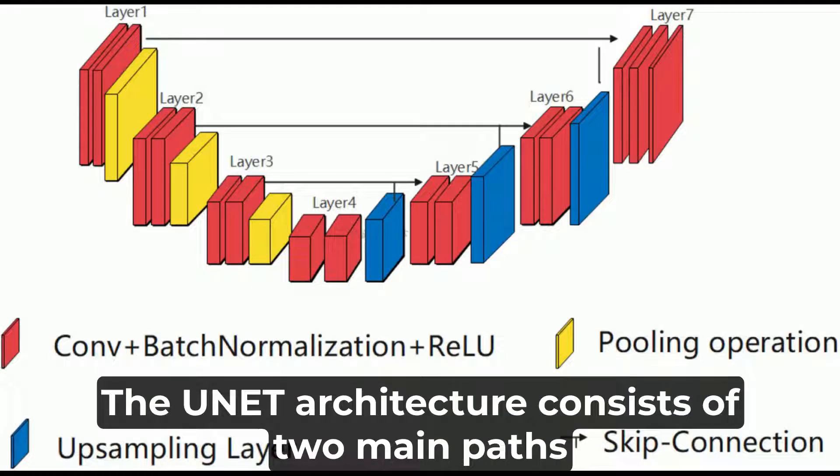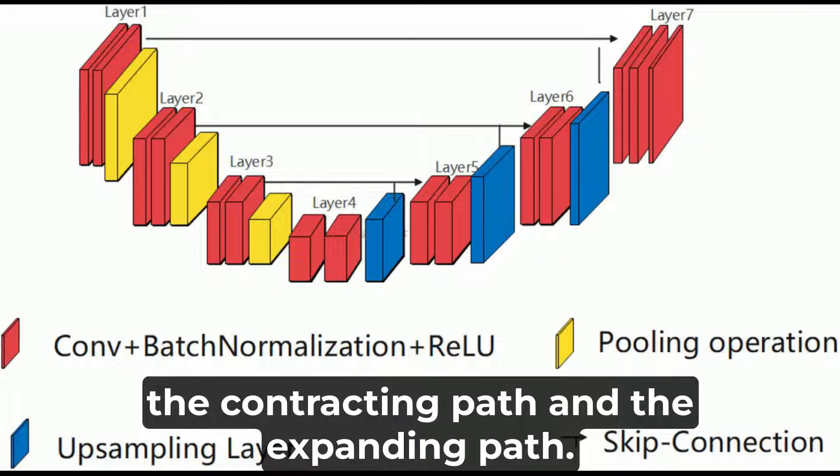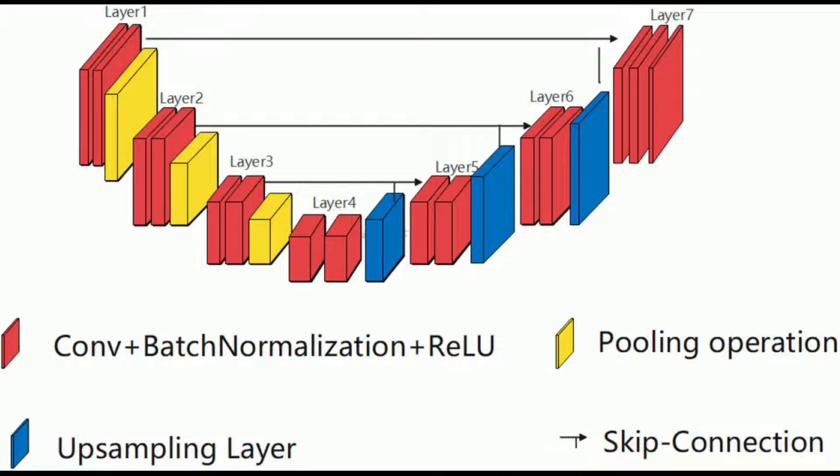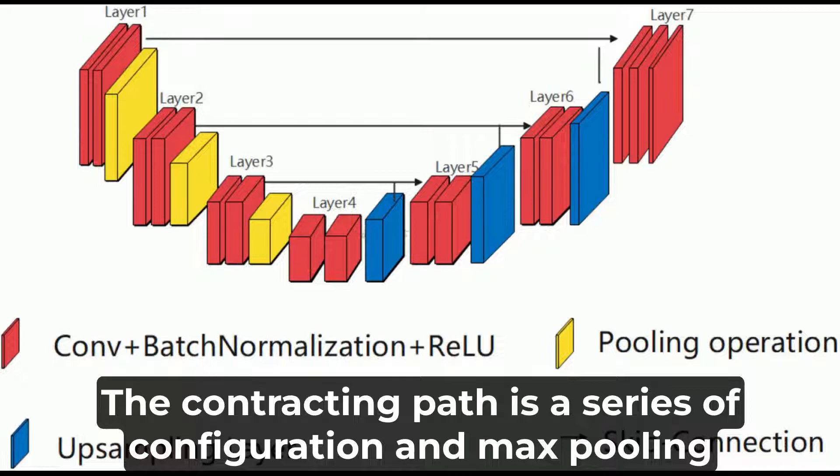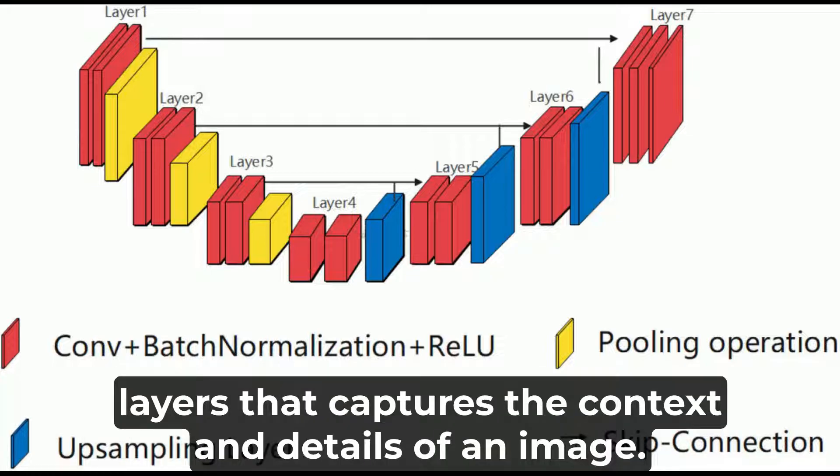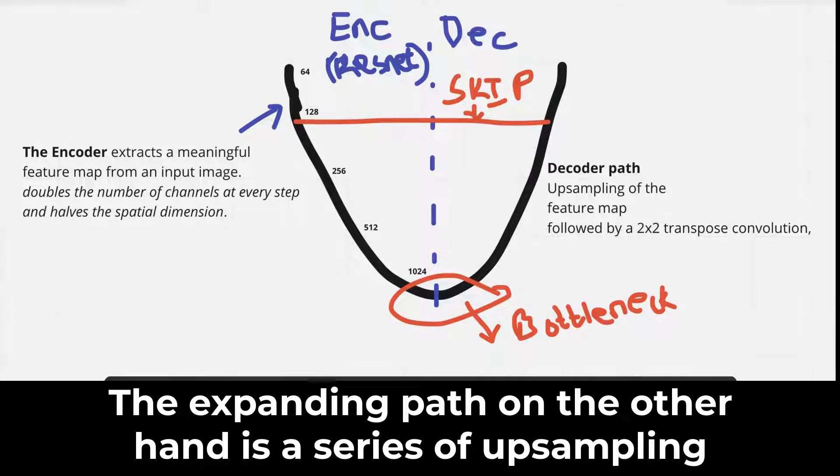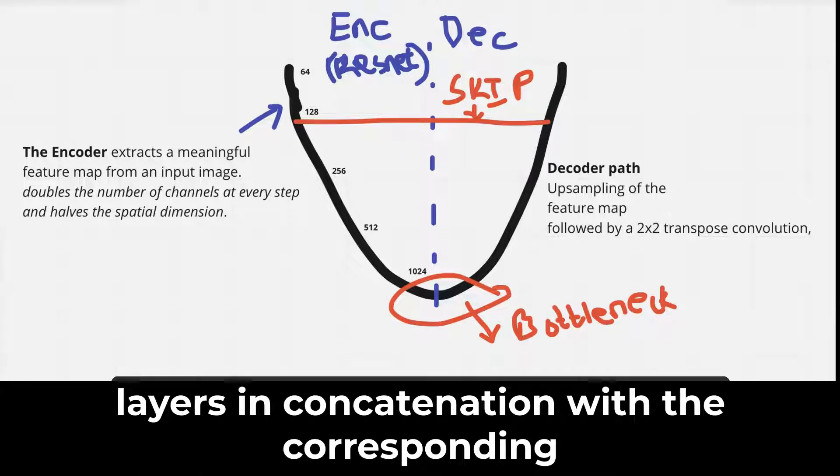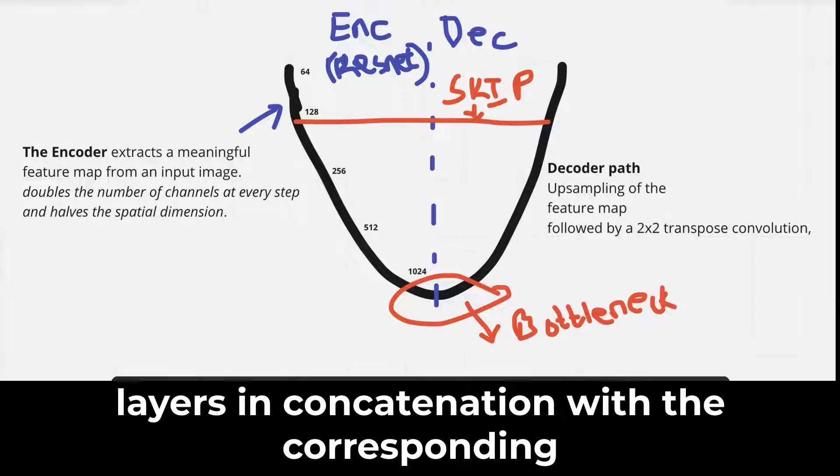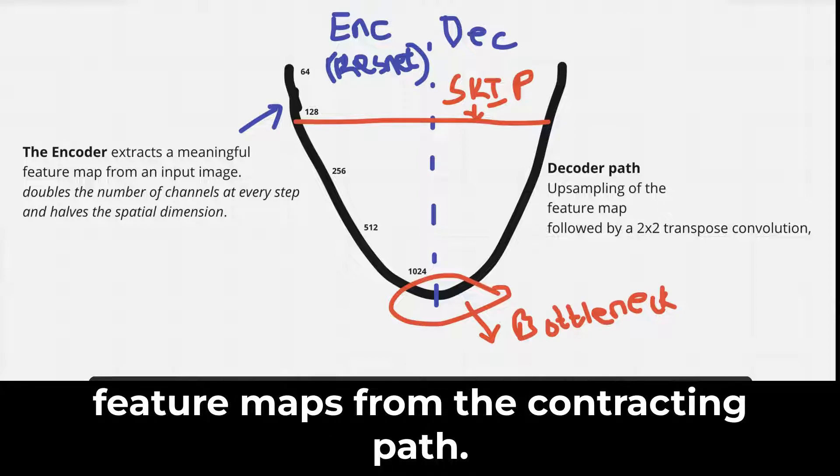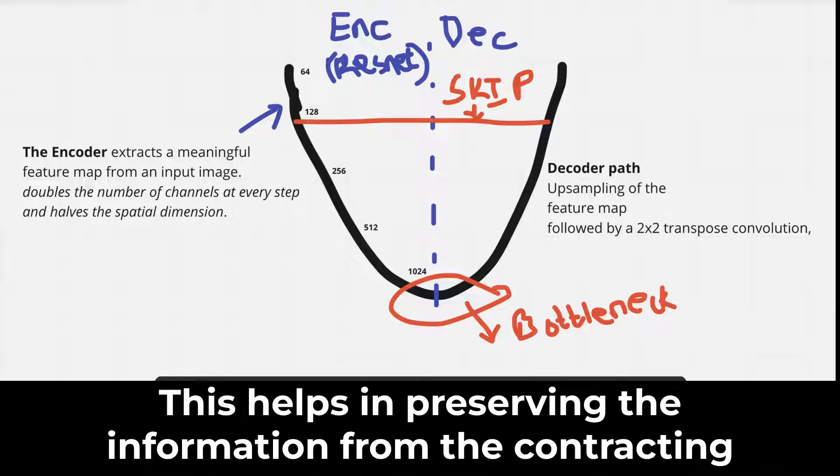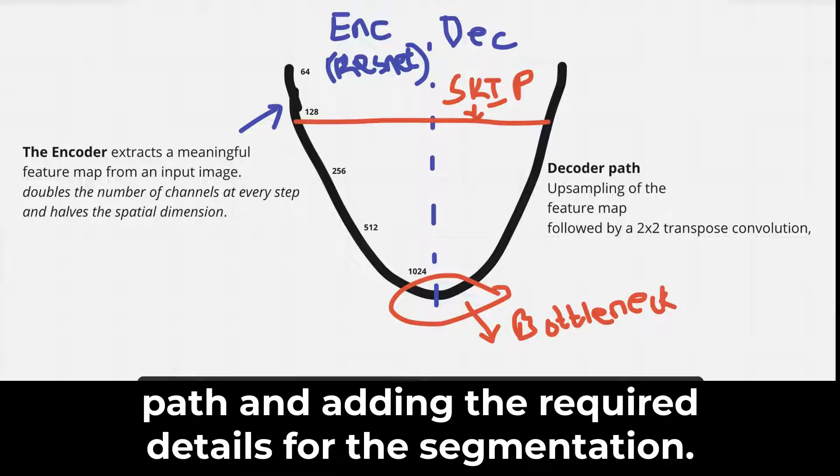The UNET architecture consists of two main paths, the contracting path and the expanding path. The contracting path is a series of convolution and max pooling layers that captures the context and details of an image. The expanding path, on the other hand, is a series of upsampling layers in concatenation with the corresponding feature maps from the contracting path. This helps in preserving the information from the contracting path and adding the required details for segmentation.